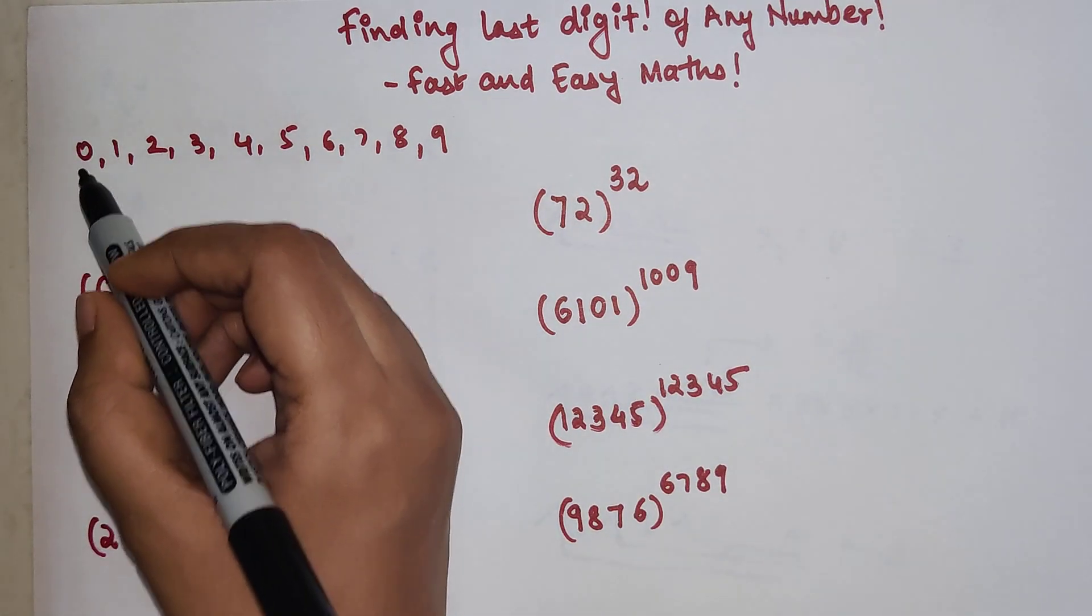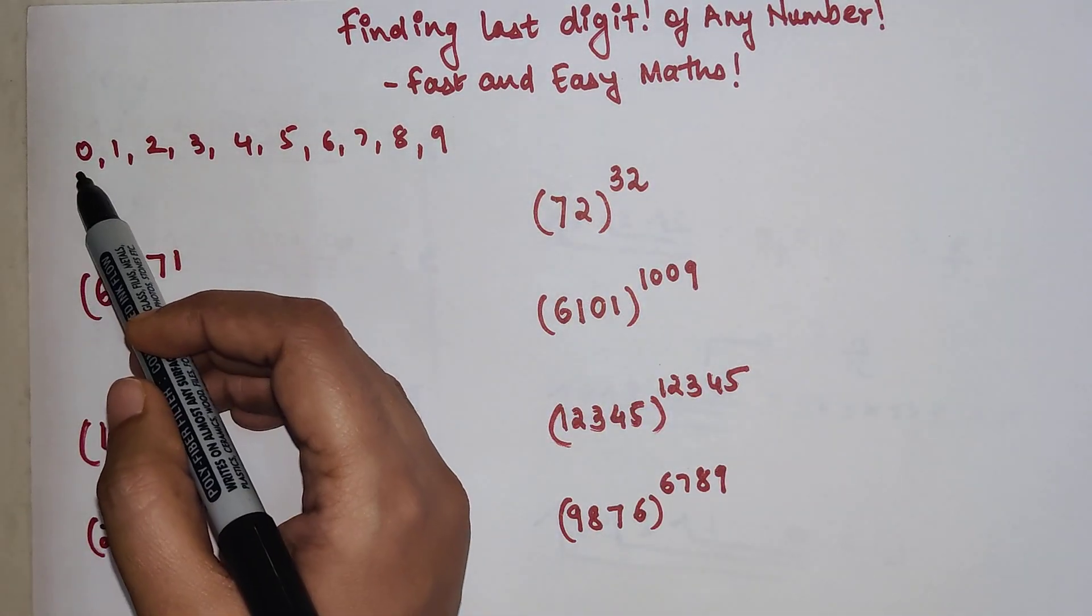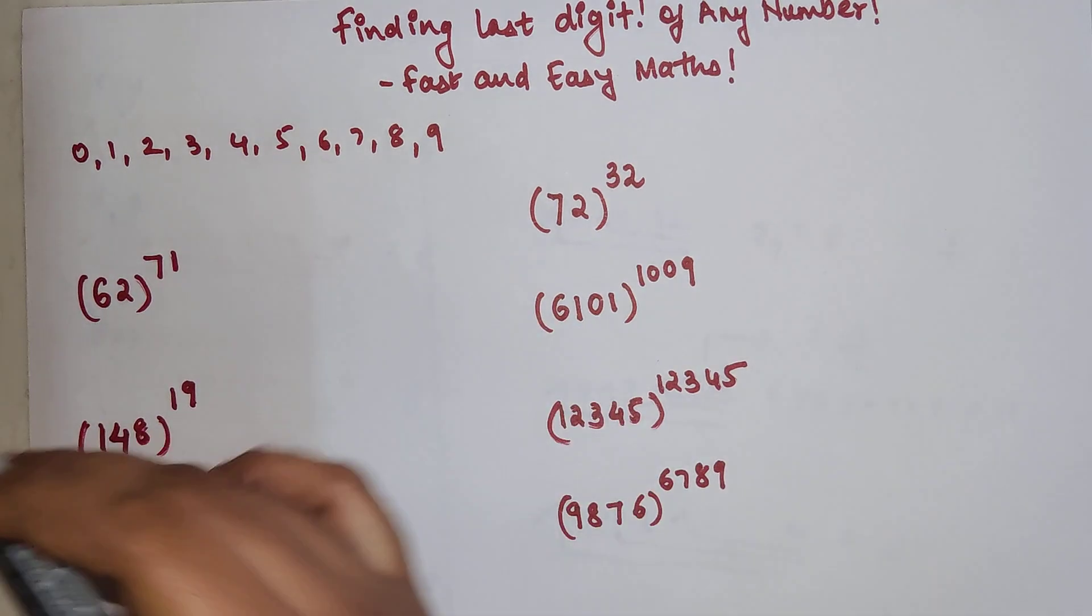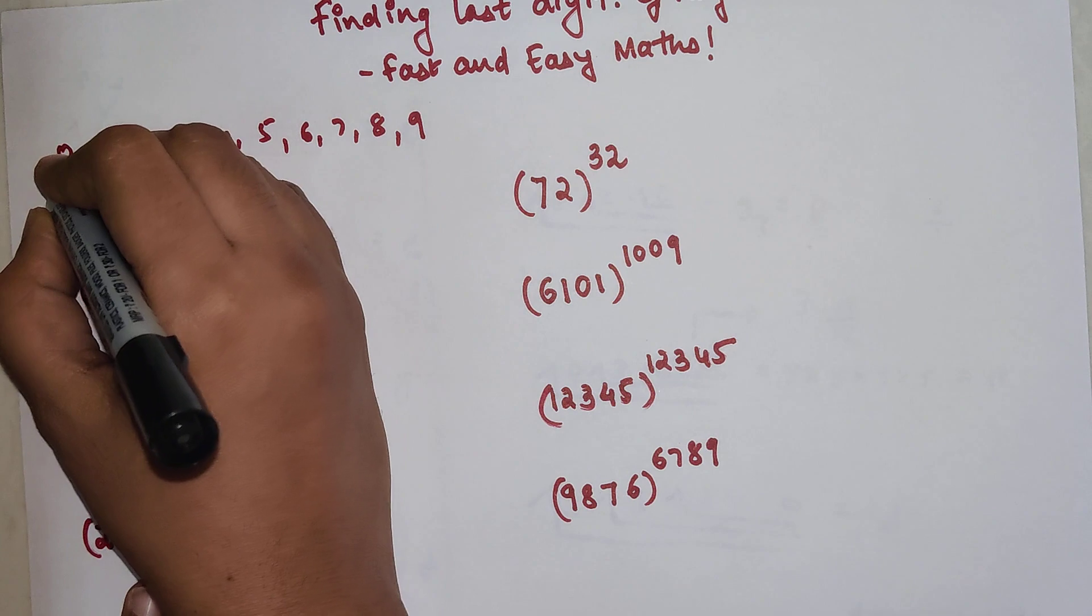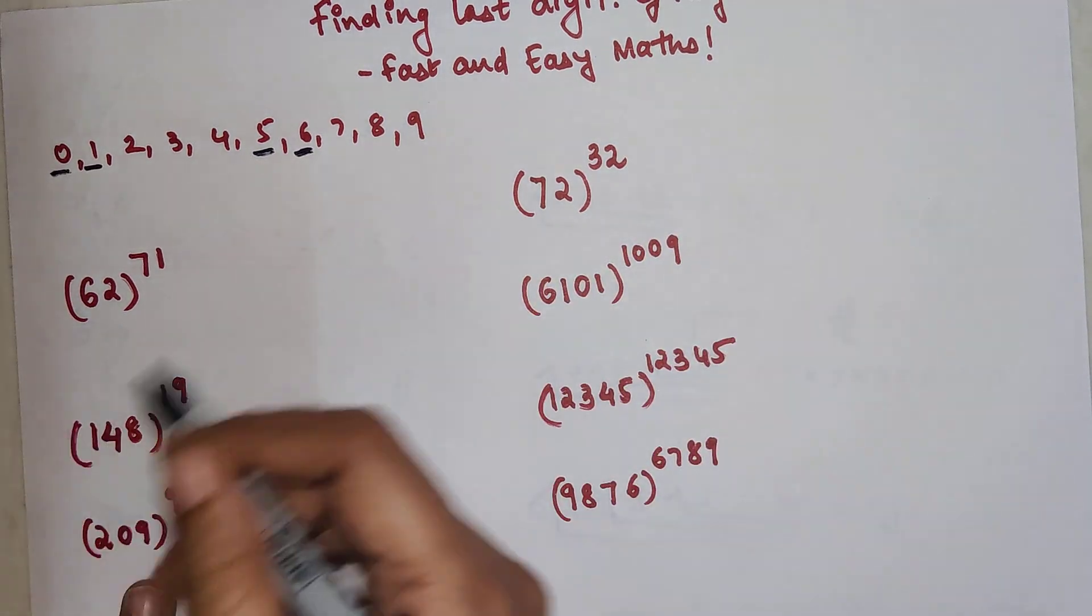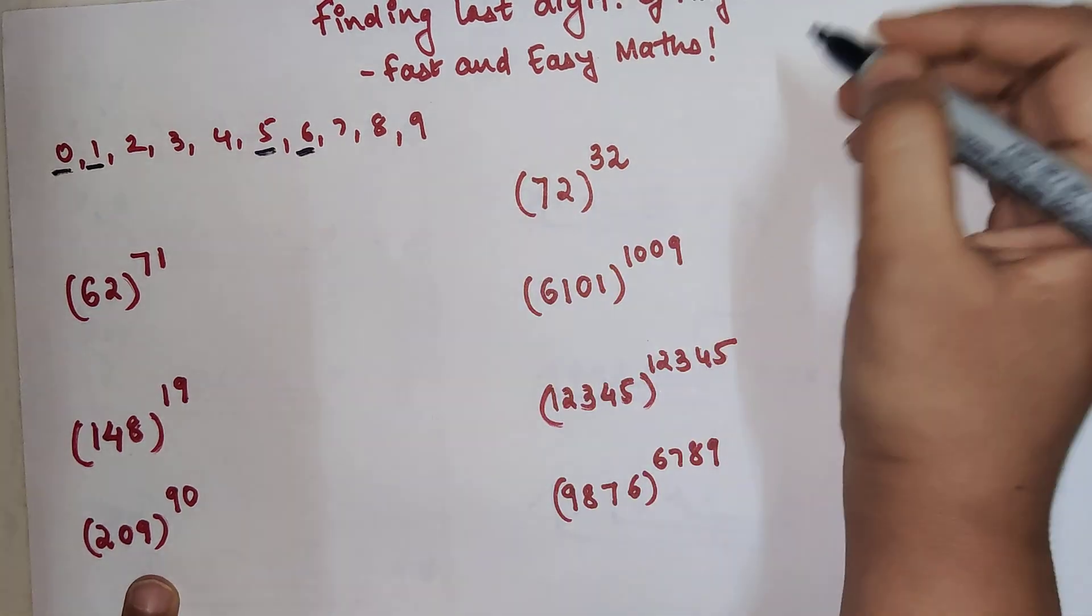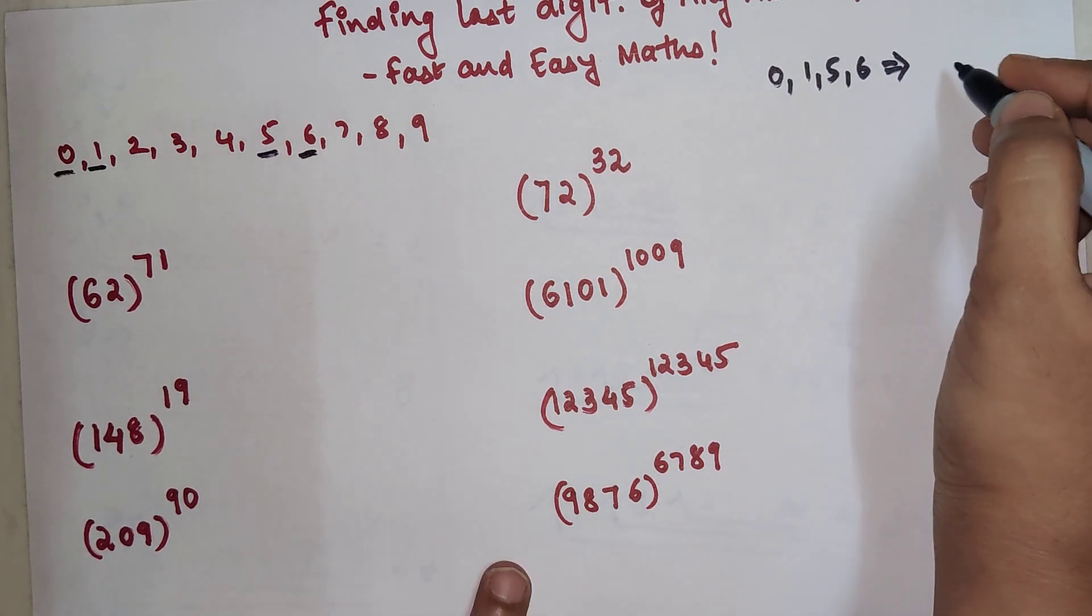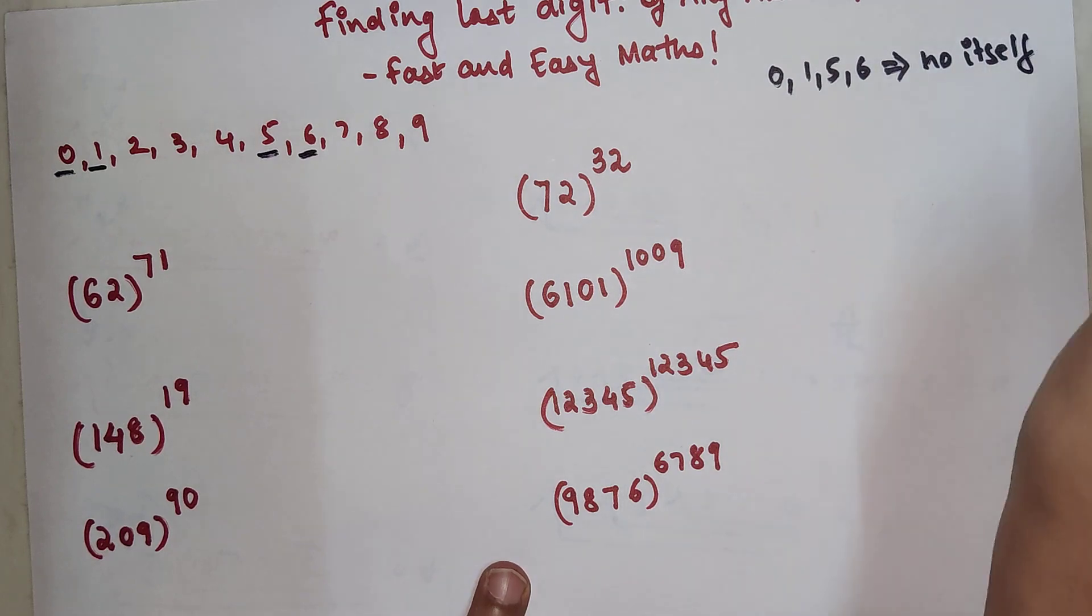Let's quickly begin. What are the last digits in any number? The possible numbers of last digits are anything from 0, 1, 2, 3, 4, 5, 6, 7, 8, or 9—only these numbers can come in your units place. Out of these, 0, 1, 5, and 6 are special. Whenever you have any number ending in 0, 1, 5, or 6, the answer is nothing but the number itself raised to any power.